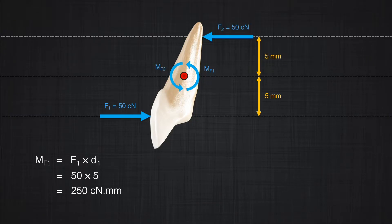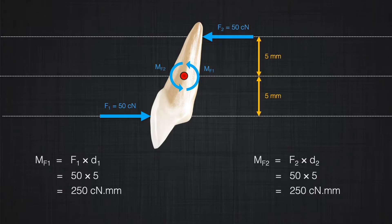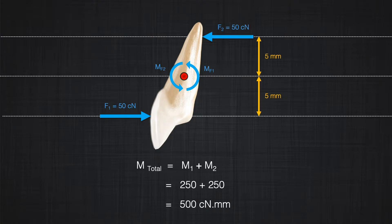F2 is 50 centinewtons, applied five millimeters from the center of resistance. Therefore, the moment it produces is 250 centinewton-millimeters and it is also counterclockwise. So when we apply two forces in this condition, we produce a bigger moment. The total moment is M1 related to F1 and M2 related to F2, giving a total of 500 centinewton-millimeters. This is a very unique situation.